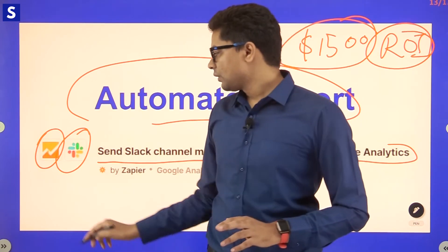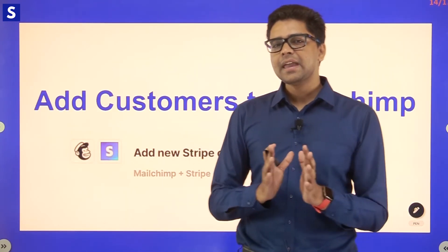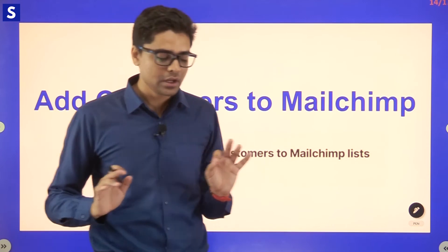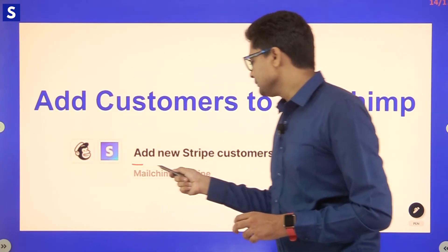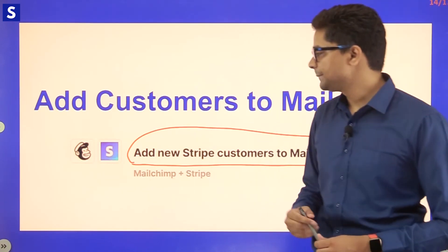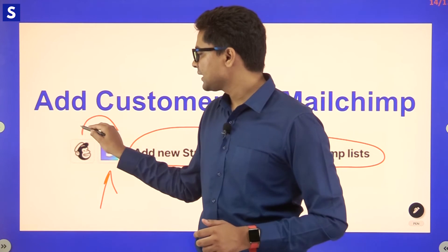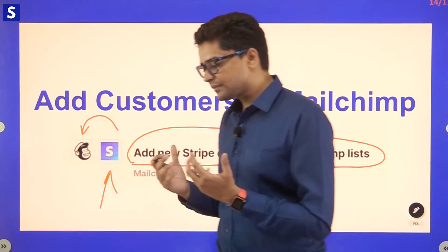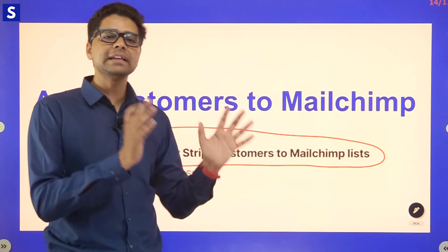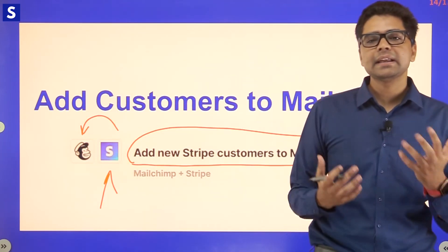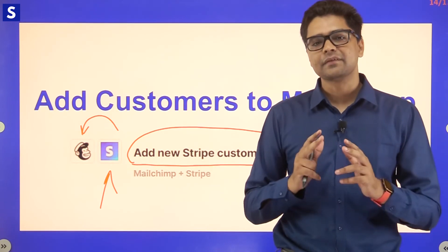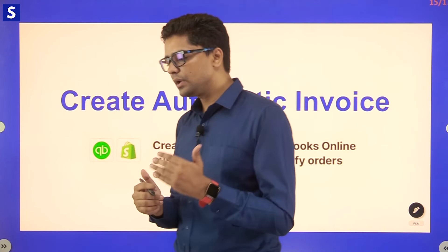If you're using Stripe to take payments, once a customer has paid for a subscription or product, you can automate adding them to your email list. Use the flow 'add new Stripe customers to Mailchimp list' — when someone purchases something, Stripe provides the customer details and they are automatically added to your email list. You can also create a dedicated list of customers who have purchased, enabling a special marketing campaign targeted specifically at existing buyers without any manual work.